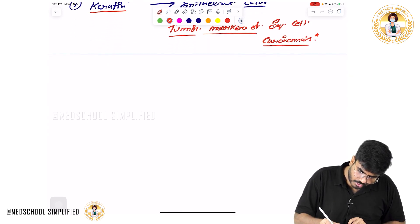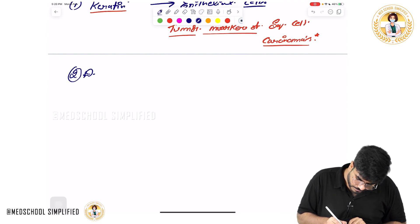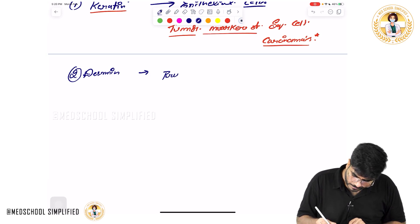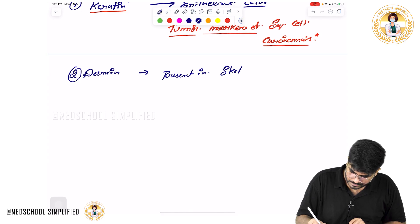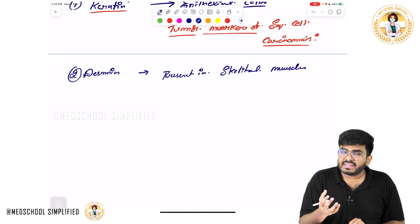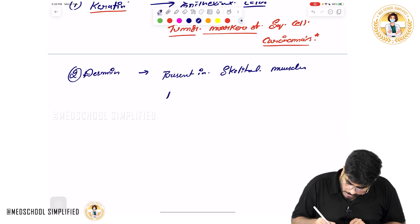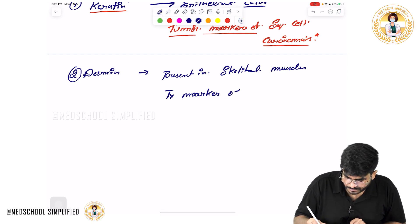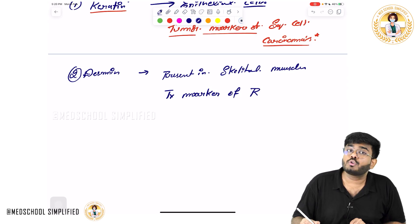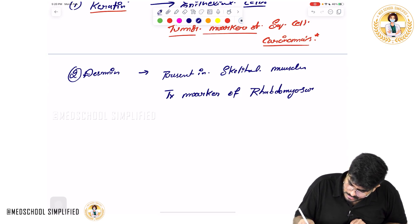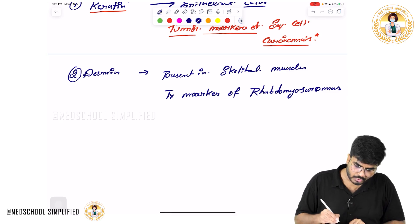The next type of intermediate filament is desmin. Desmin is present specifically in skeletal muscles. If you have a cancer arising from skeletal muscles, those cells are going to be positive for desmin. Skeletal muscle cancer is called rhabdomyosarcoma, and the tumor marker for rhabdomyosarcoma is desmin.